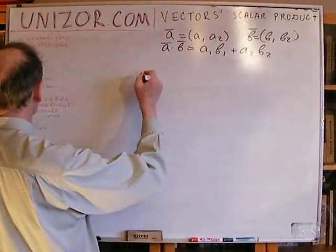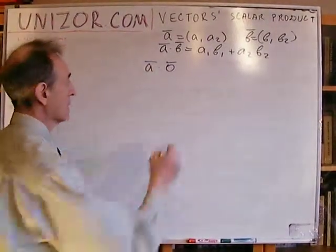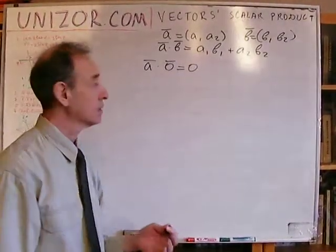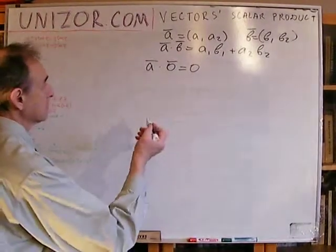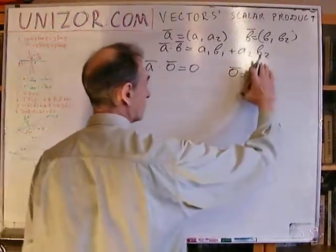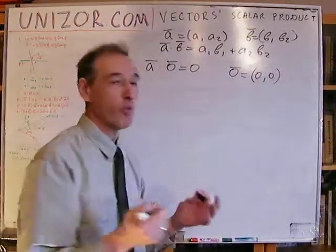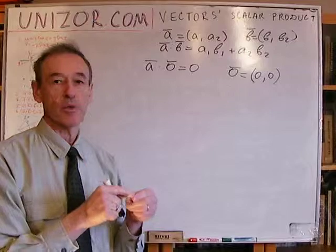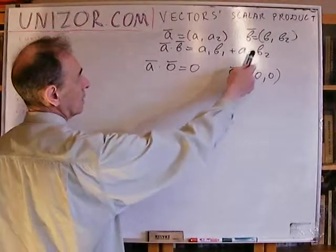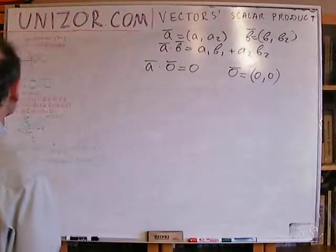This was the more difficult part of the proof. The rest of the rules are really trivial. The second rule was that multiplication by the null vector should give a result equal to zero. This is easy: the null vector has zero length, meaning its coordinates are both zero. If b1 equals zero and b2 equals zero in the formula, you obviously get zero. So the second rule is trivial.